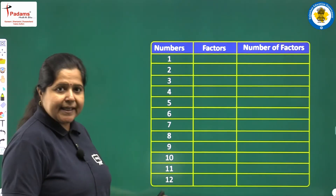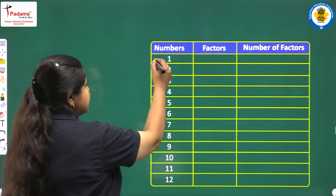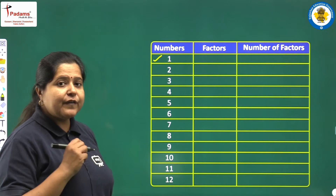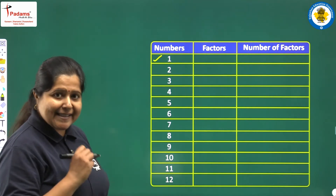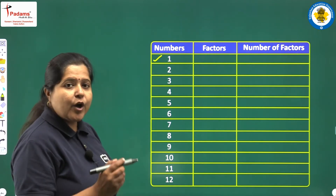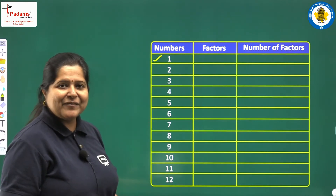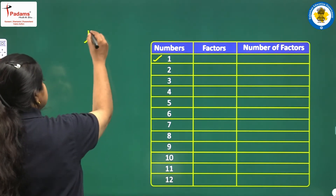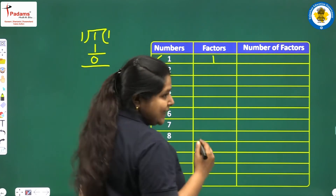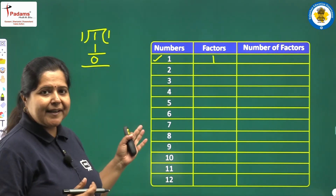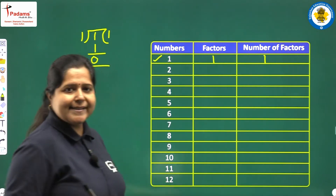We have these numbers with us; we will find out their factors and write down the number of factors each number has. We start with the number 1. By a factor we mean a number which will divide the given number completely, leaving remainder 0. So, which number will divide 1 completely? Obviously, it will be 1 itself. If we divide 1 by 1, then 1 one is 1 and the remainder is 0. So, its factor is 1. You won't get any other such number, so the number of factors of 1 is just 1 — a single factor.